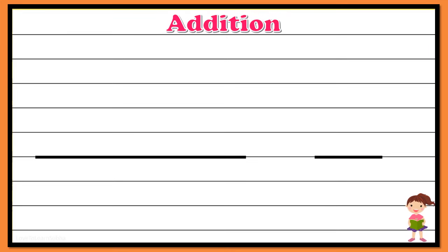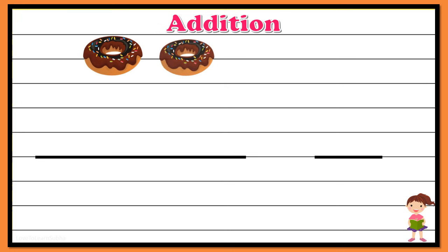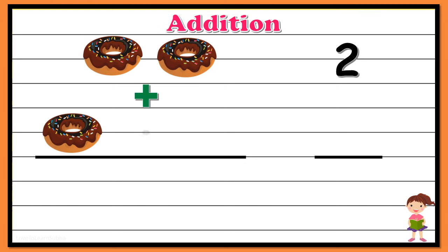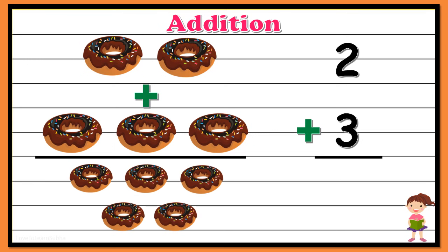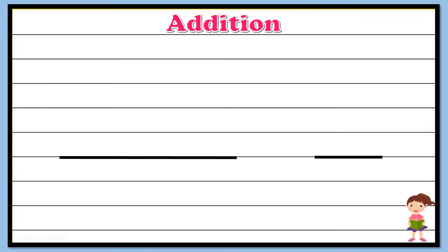Now let's check out our next example. Here we have one, two — so there are two donuts — plus one, two, three — so here it is plus three donuts. Now let's start counting the donuts again: one, two, three, four, five. So totally we have five donuts. Two plus three gives five.